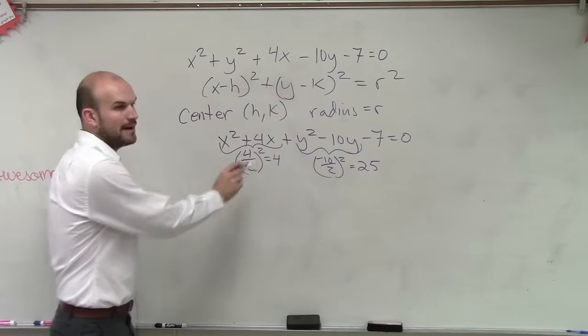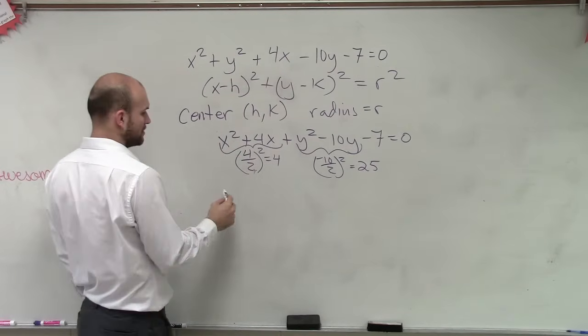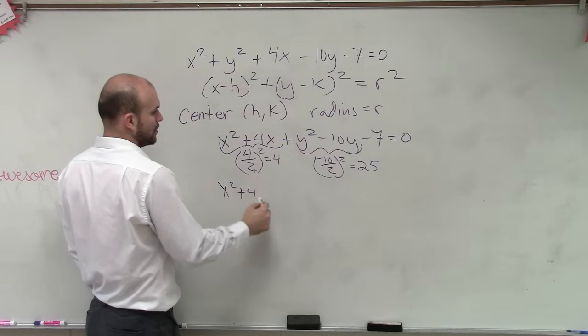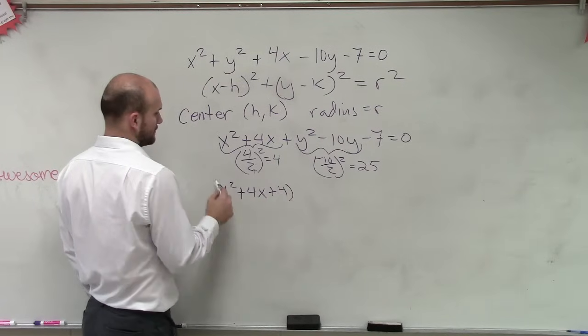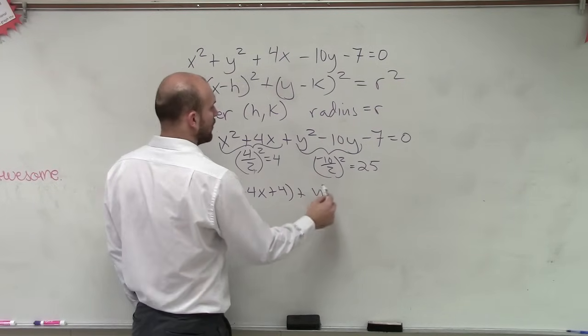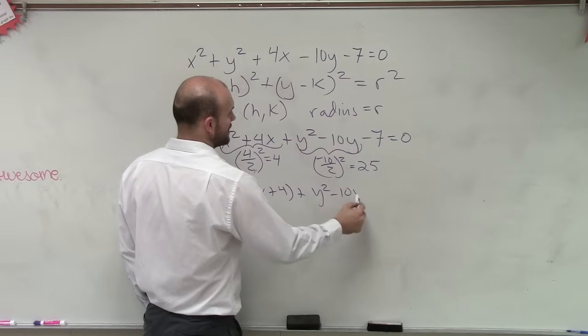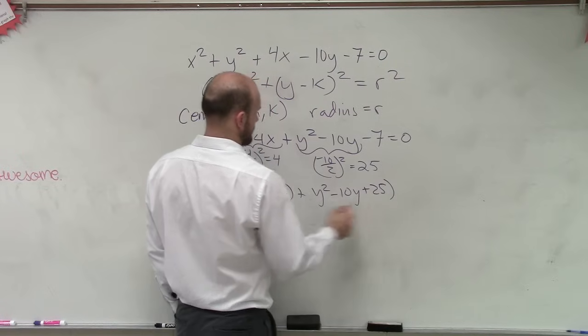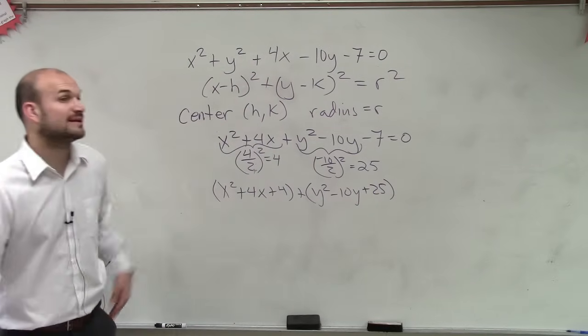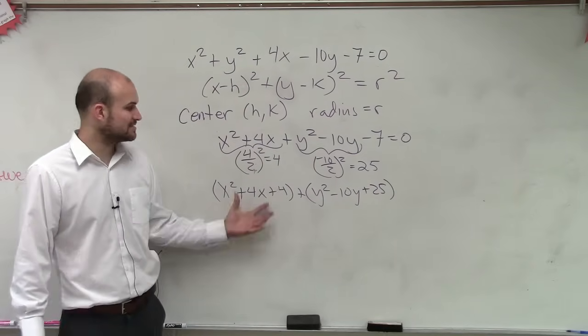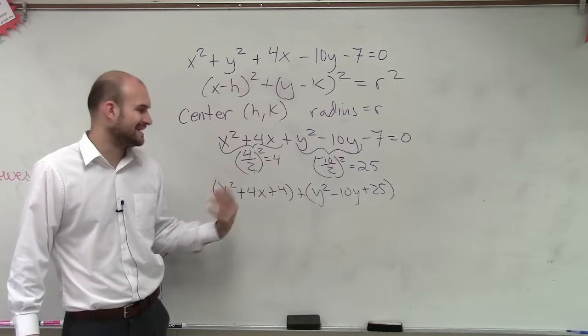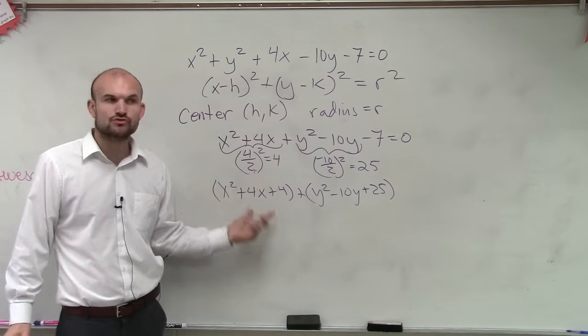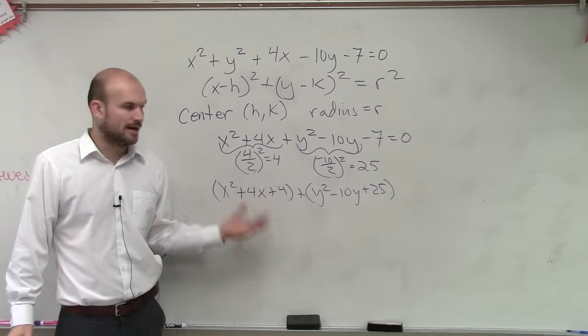So now, remember, we add each one of those into our components. Now I have x squared plus 4x plus 4 plus y squared minus 10y plus 25. When we complete the square, what we do is we now have taken a binomial and created a perfect square trinomial.